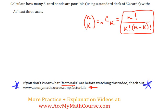Now let's calculate how many five card hands are possible with at least three aces. When you're doing a combination problem and you see the words at least or at most, that's going to require something slightly different.